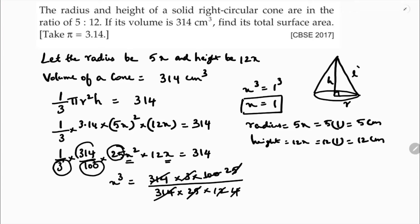The relation between l, h, r - slant height, height and radius - is l square equals h square plus r square. h is 12, r is 5.